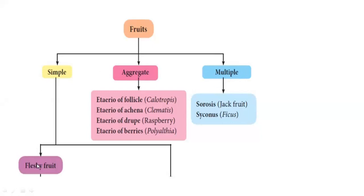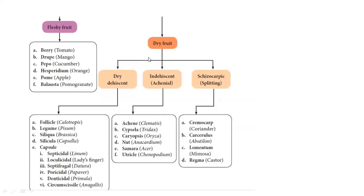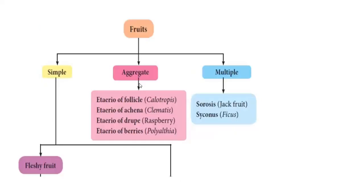Simple fruit is fleshy fruit. Simple fruit is a big division: fleshy fruit and dry fruit. Aggregate fruit is an etaerio. Etaerio of follicle, etaerio of achene, etaerio of drupe, etaerio of berries.